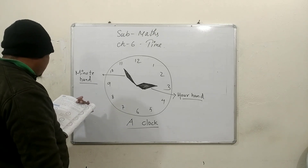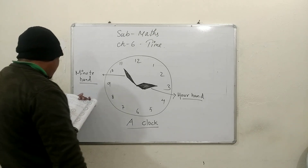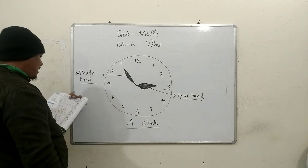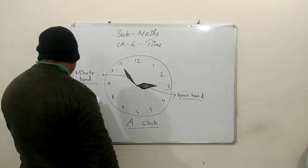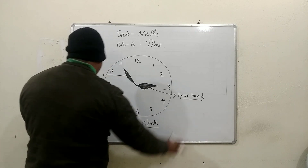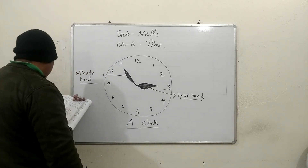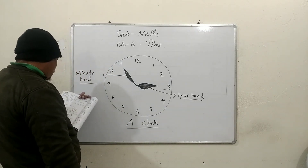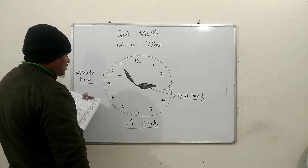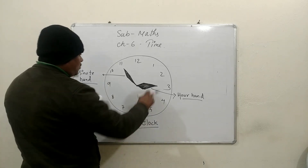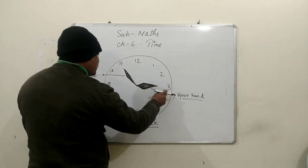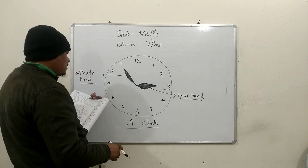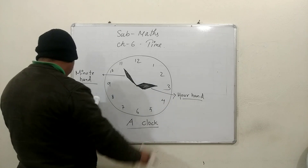The clock has two hands. The longer hand is called the minute hand, and the shorter hand is called the hour hand. The hour hand takes exactly one hour to go from one number to the next number.